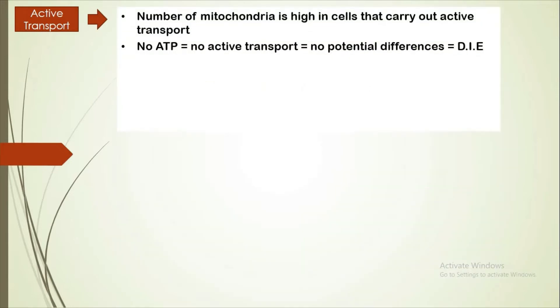Therefore, since active transport requires energy, the number of mitochondria is high in cells that carry out active transport.